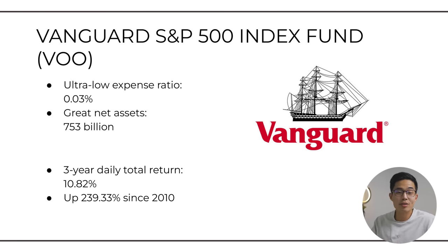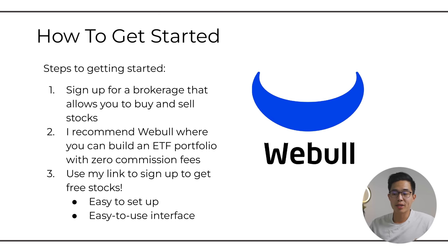Now let's talk about how you can actually get started investing in ETFs with as low as $100. First, you're going to want to sign up for a brokerage that allows you to buy and sell stocks. For a lot of beginners, I just recommend going with something like Webull — I personally use them and have a multiple six-figure portfolio on this app. If you sign up using my link down below, they're going to give you a ton of free stocks, for a limited time only. There's also another platform called Moomoo, which I also use. They have zero commission fees, are very easy to use, with lots of powerful tools, and they're also giving out a ton of free stocks when you sign up and make your first deposit.